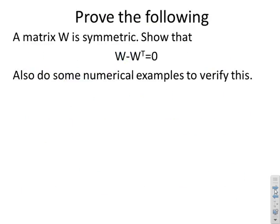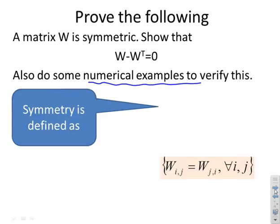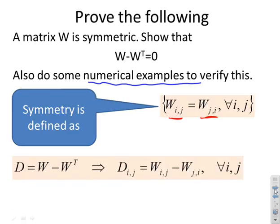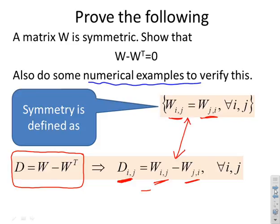A question then. Prove the following: a matrix W is symmetric, show that W minus W transposed equals 0. I'm not going to do any numerical examples, I'll leave you to do that. Symmetry is defined as W_ij equals W_ji for all i,j, and the matrix being square. If I substitute that definition into this formula, defining D equals W minus W transposed, the coefficients of D, D_ij, are given by W_ij minus W_ji. But we've just noted that these two are the same. Therefore, by definition, all the coefficients of D are 0.